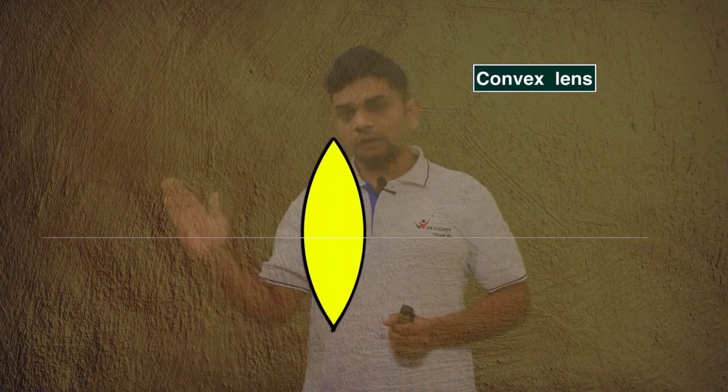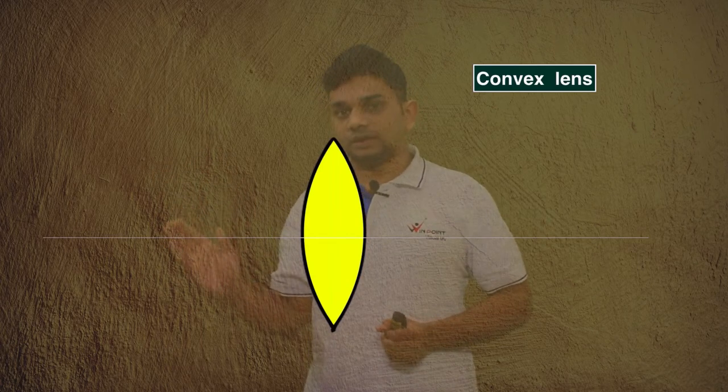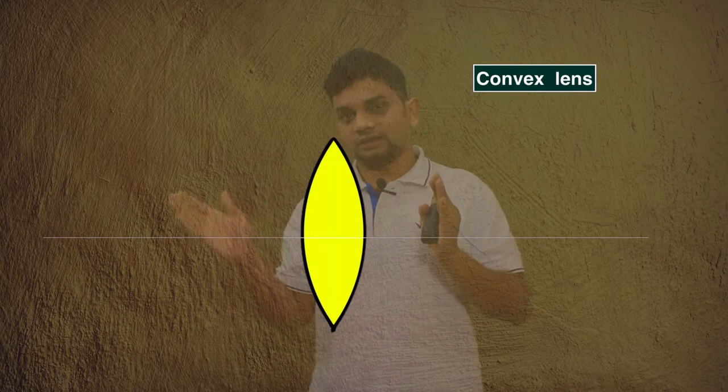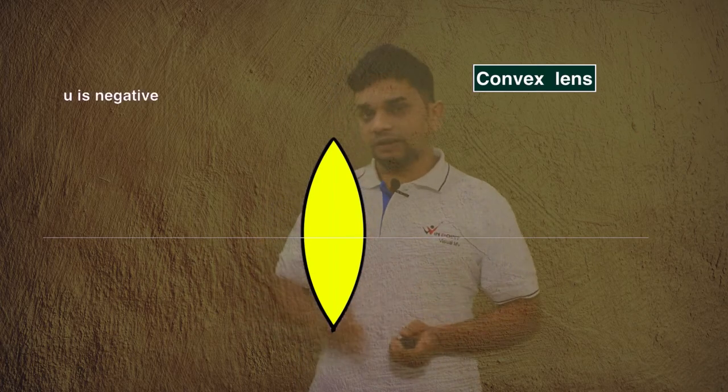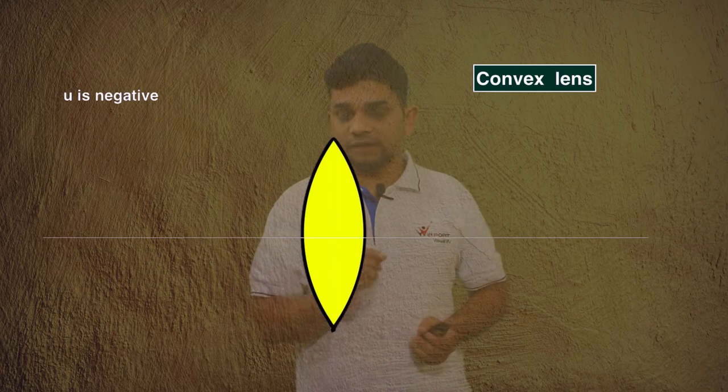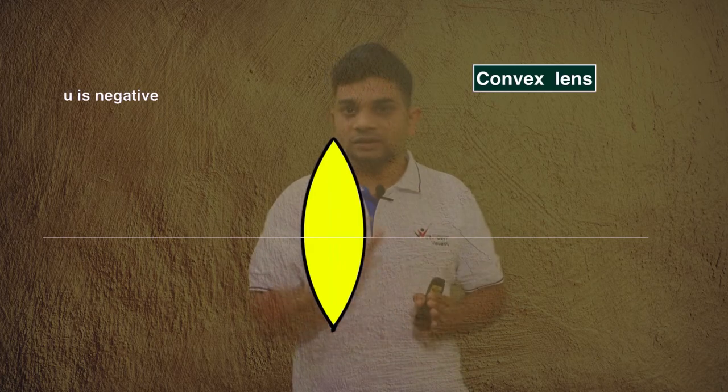For a convex lens, the object distance u is always negative because we always place the object on the left side of the lens. This is true for mirrors as well — the object is always placed on the left side. So u is always negative in all problems. You can confirm and write that u is negative.